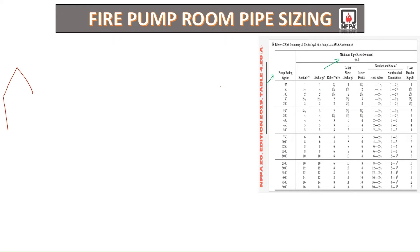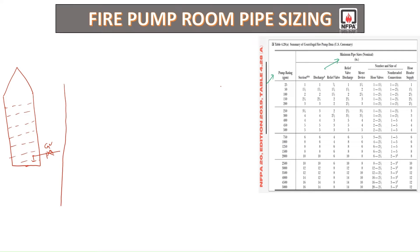Here we have the fire water tank and we are going to draw the suction line. We have one gate valve and this water tank is filled with water. Now we are going to take one suction header, from which we have three suction lines.